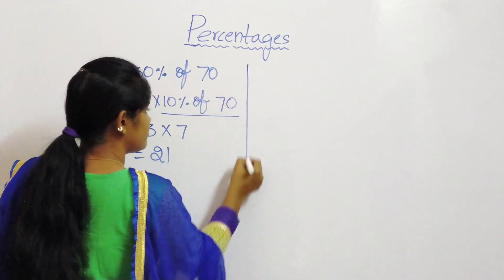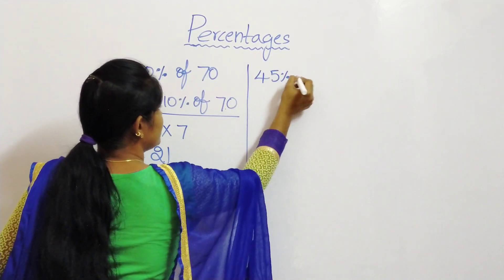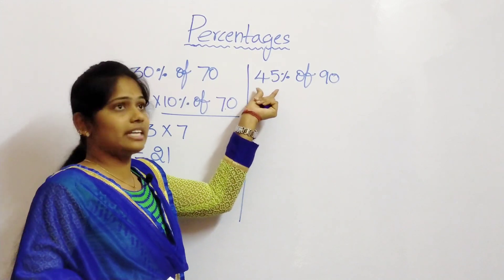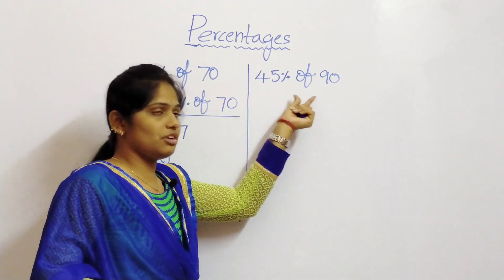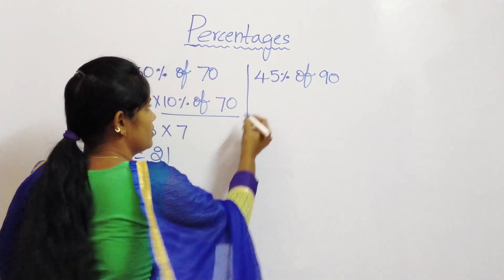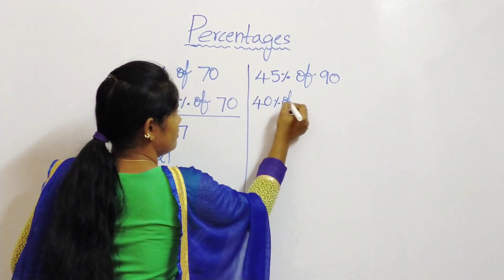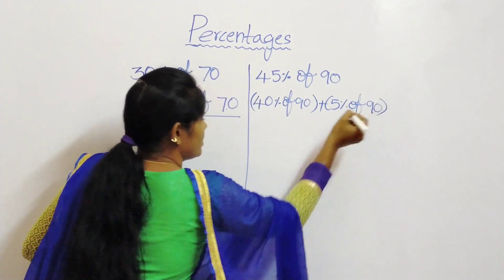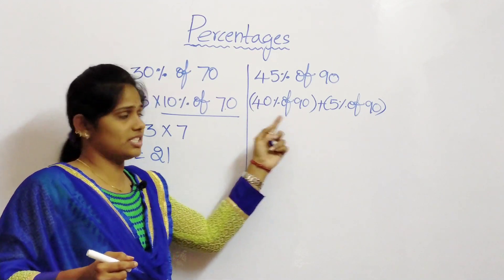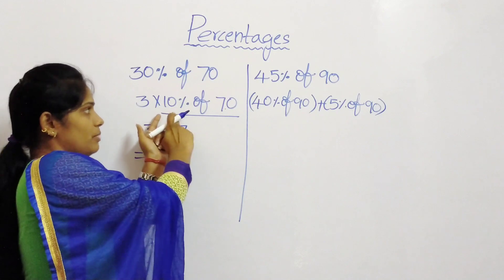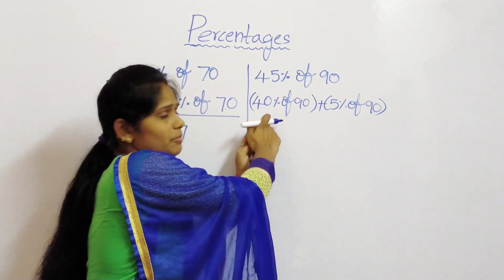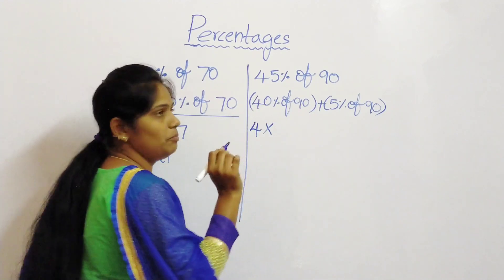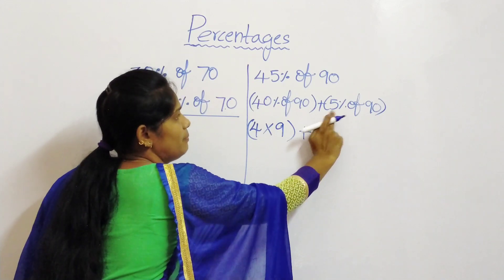Now our second example is 45 percentage of 90. Here 45 we are not going to take directly. 45 can be written as 40 percentage of 90 plus 5 percentage of 90. Here 40 percentage we can write as 4 into 10 percentage — same as the previous example where 30 was written as 3 into 10 percentage of 70. So 4 into 10 percentage of 90 gives 9.0, that means 9.